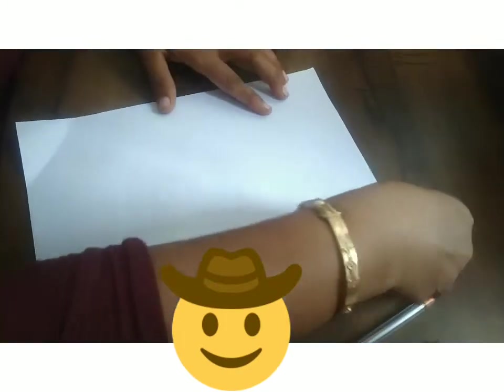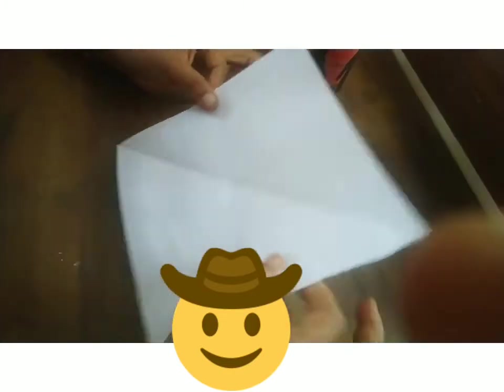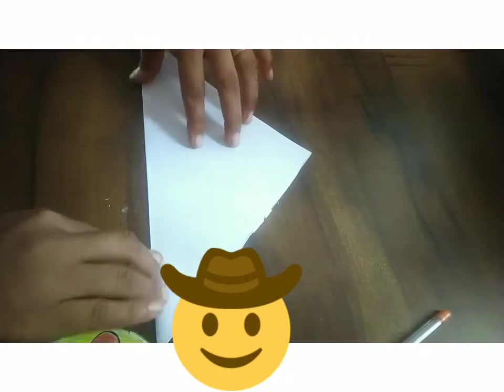First of all, I will cut this paper into square shape. Here I got the square shape paper. First of all, I will fold this in diamond shape.